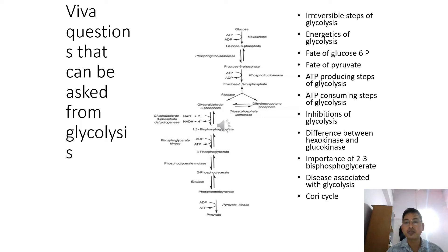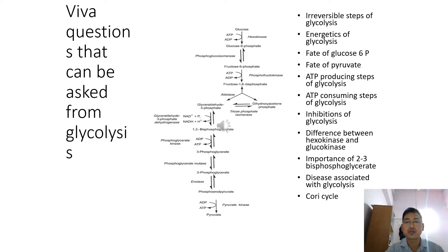ATP-consuming steps of glycolysis — there are two steps in which ATPs are consumed: step one catalyzed by hexokinase or glucokinase in the liver and hexokinase in the muscle, and another step catalyzed by phosphofructokinase in which fructose-6-phosphate is converted to fructose-1,6-bisphosphate. So these two steps consume ATPs.